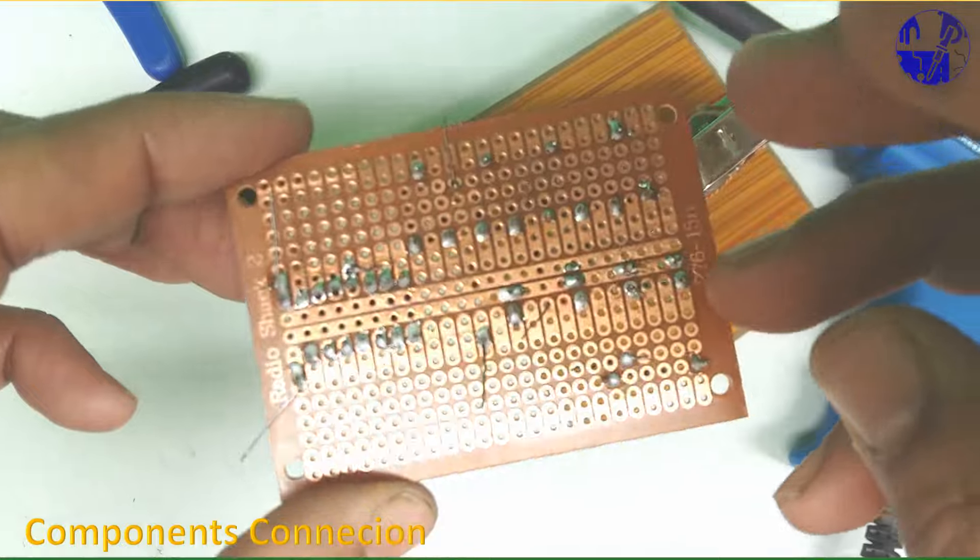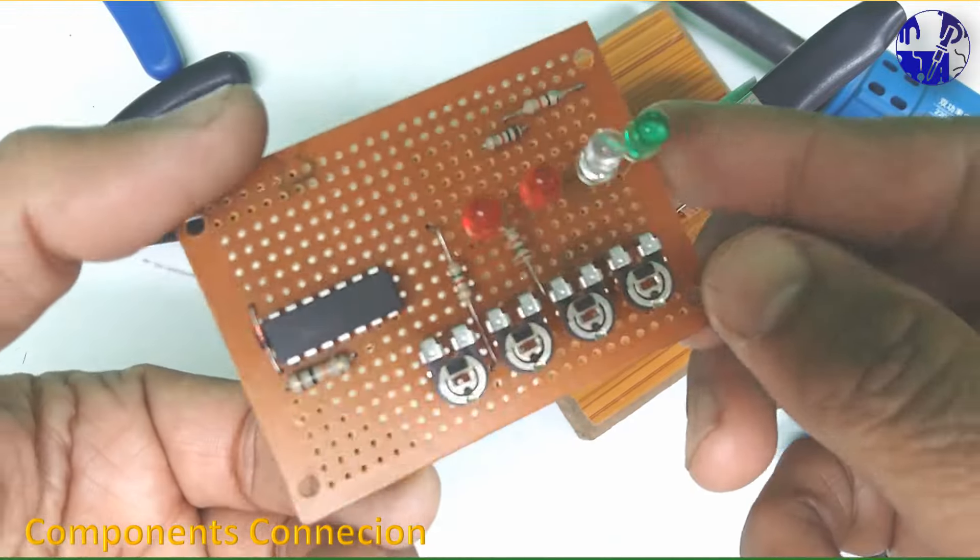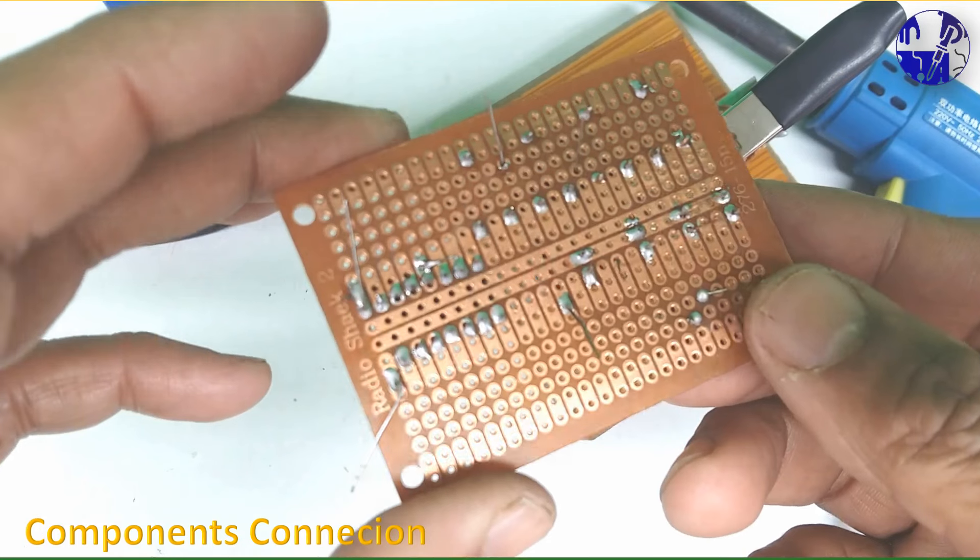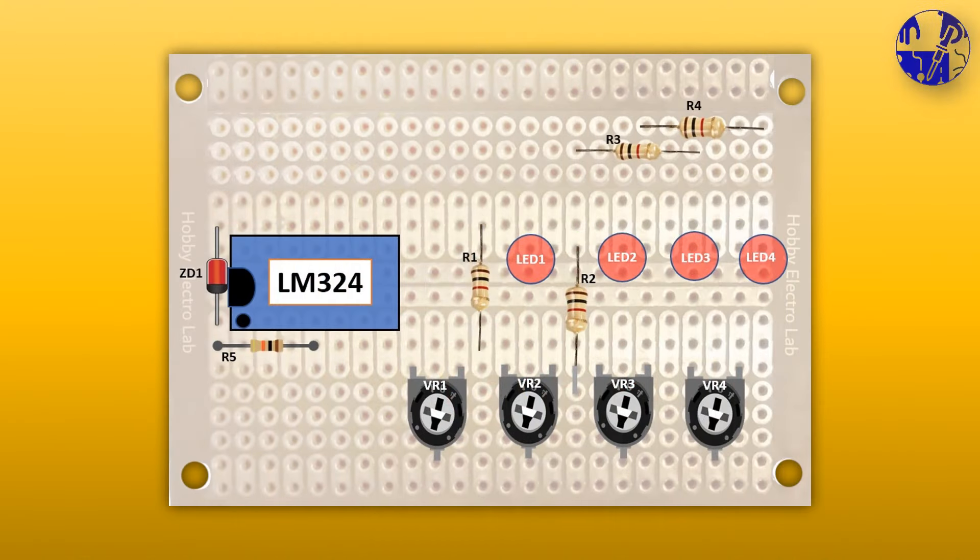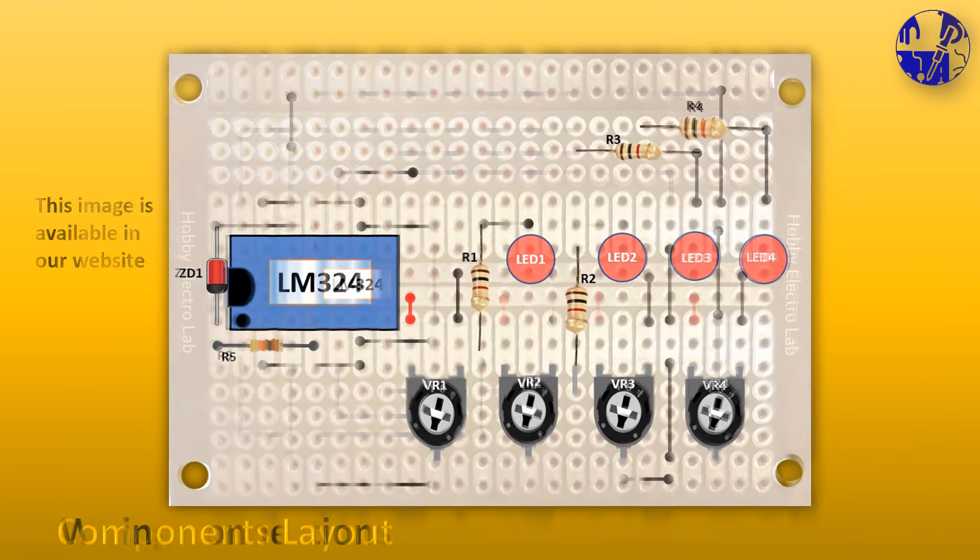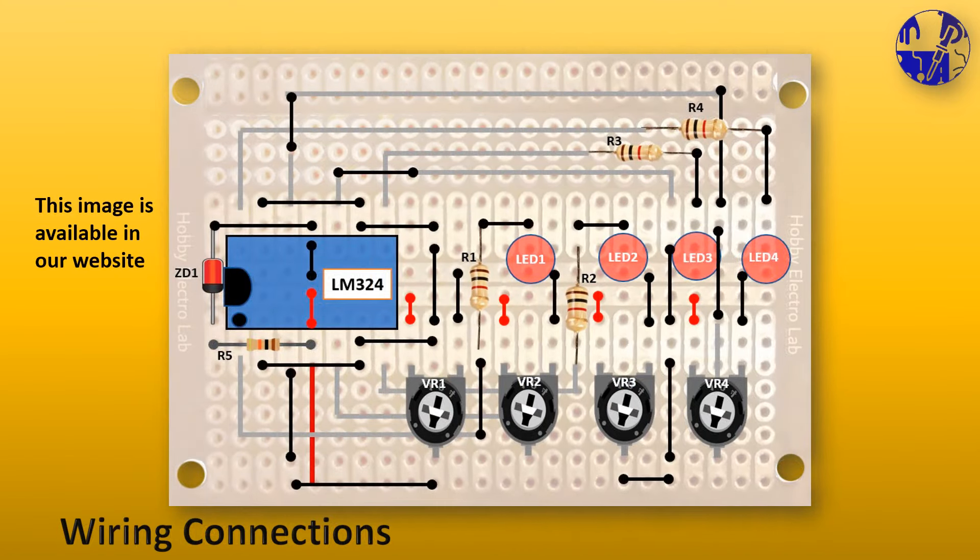Following the soldering of all components on the vero board, proceed to make wiring connections according to the diagrams displayed on the screen. The images are available for download on our website, and the link can be found in the description section.